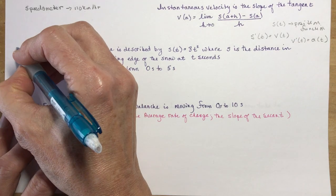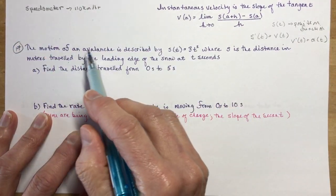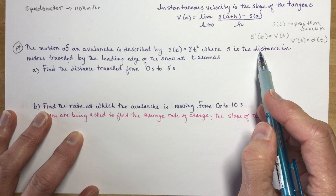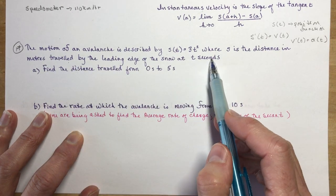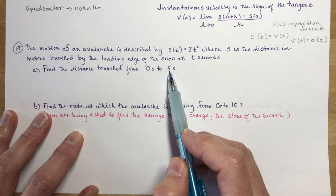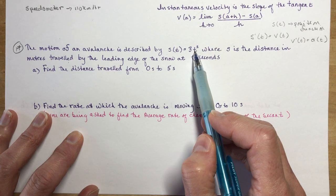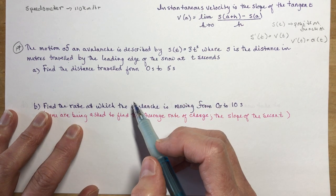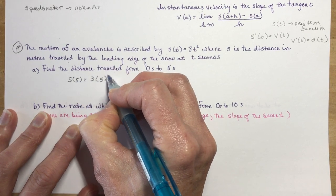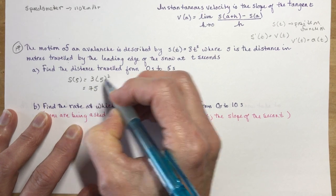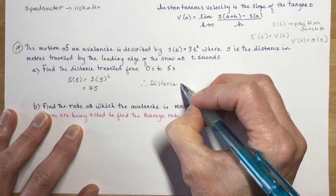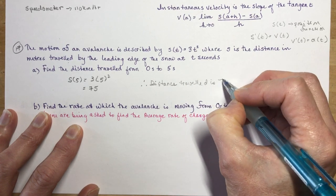Let's do a little example, I think number 17 from your textbook. The motion of an avalanche is described by the position function s(t) = 3t², where s is the distance in meters traveled by the leading edge of the snow at t seconds. Find the distance traveled from 0 to 5 seconds. Well, s(0) is 0, and s(5) equals 3 times 5² which is 75, so therefore distance traveled is 75 meters.